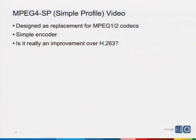MPEG-4 SP was originally designed as a replacement for MPEG-1 and 2. It has a very simple encoder model similar to H.263 with single-frame references. There's some question about whether it's actually a better codec than H.263 even though they came out very close together. It's missing the de-blocking filter — H.263 has an in-loop de-blocking filter that smooths out the 8x8 pixel blockiness in video. MPEG-4 SP in its basic profile is missing that, so some people think the quality isn't quite as good.